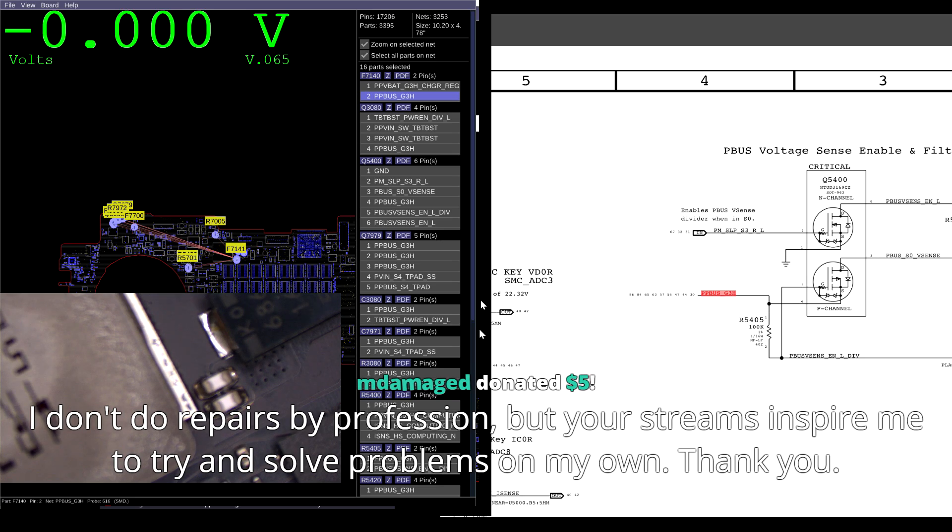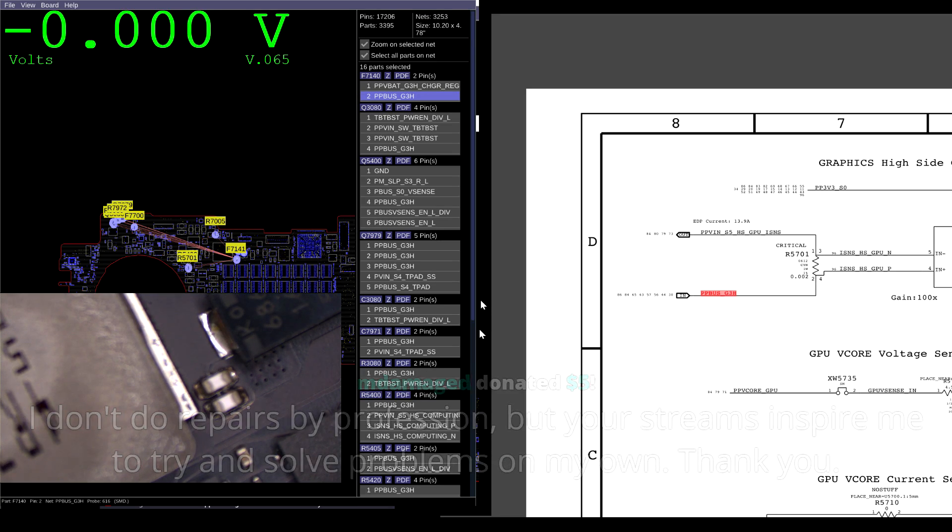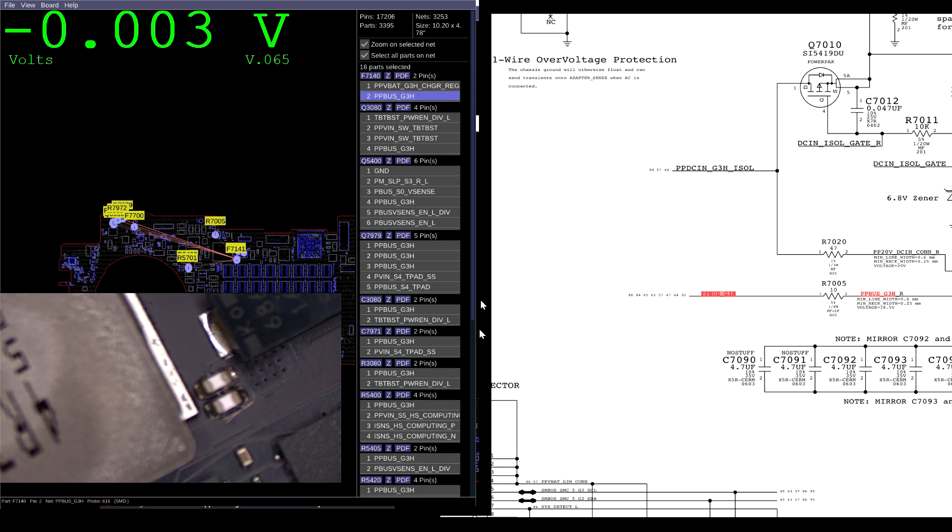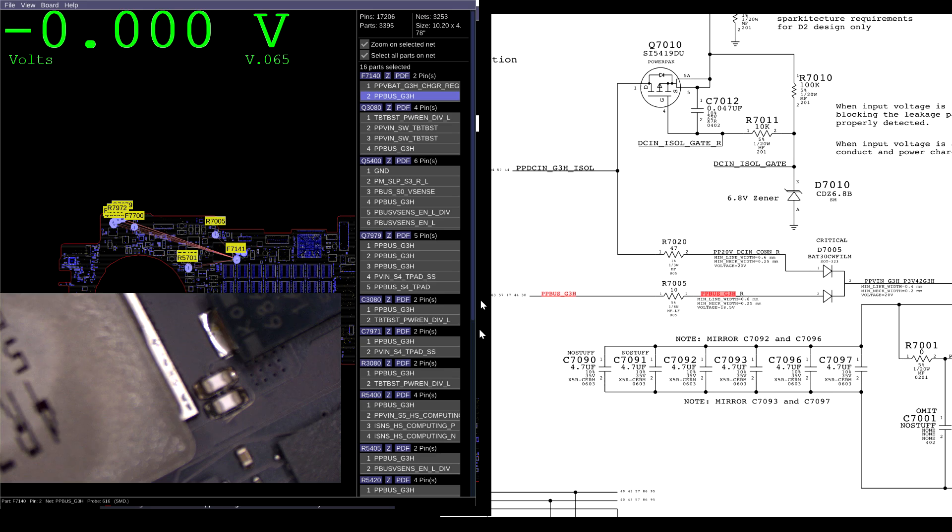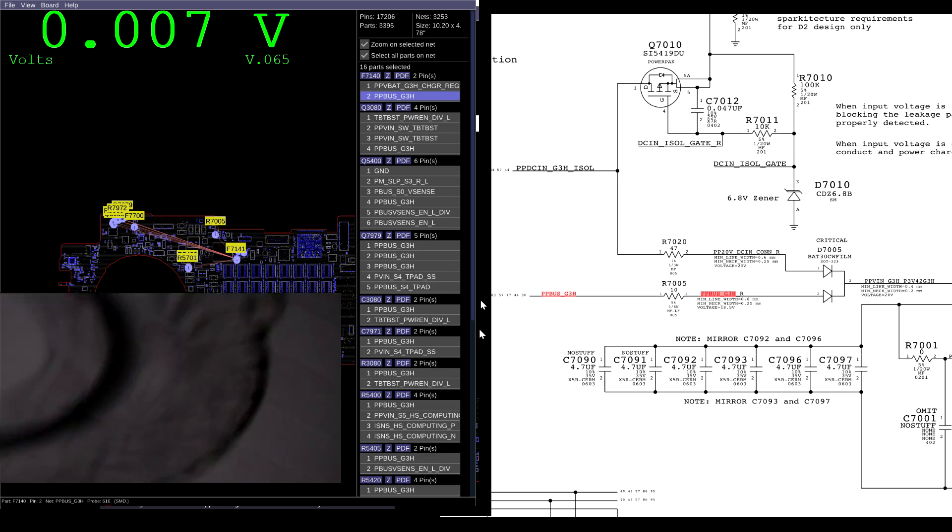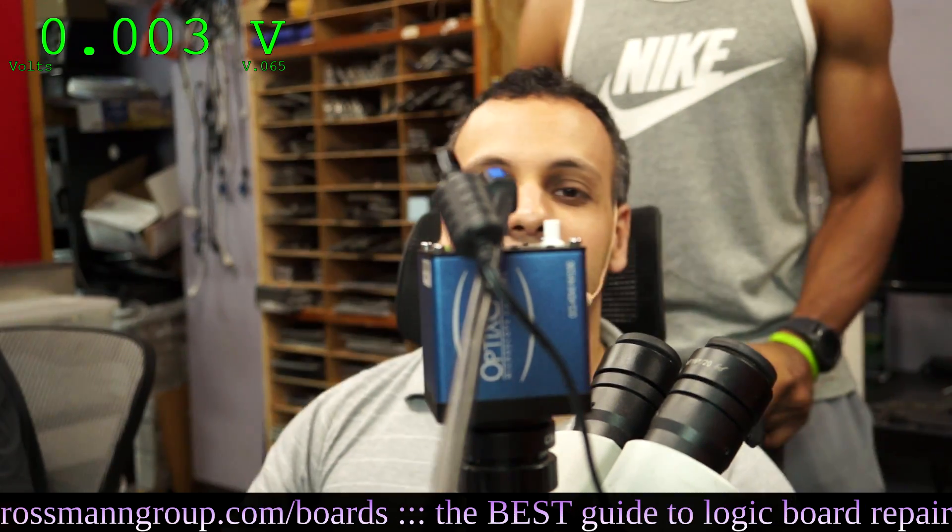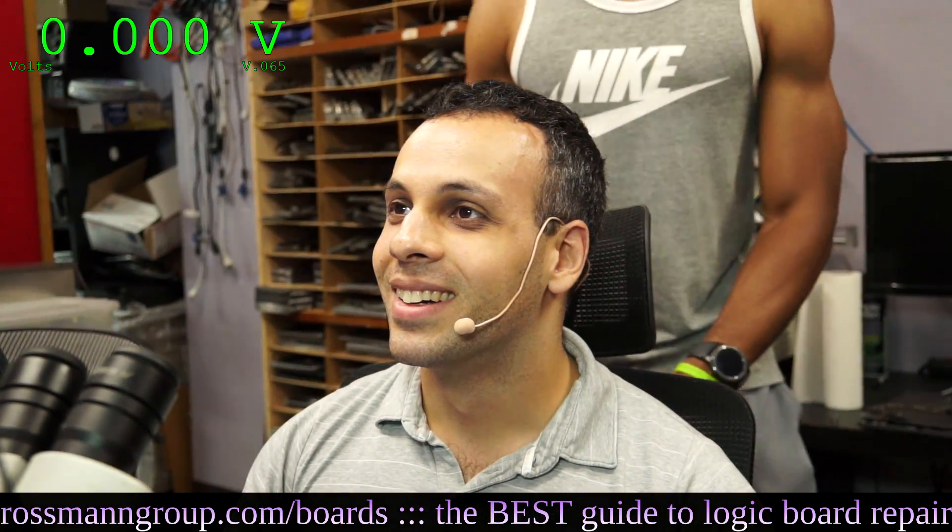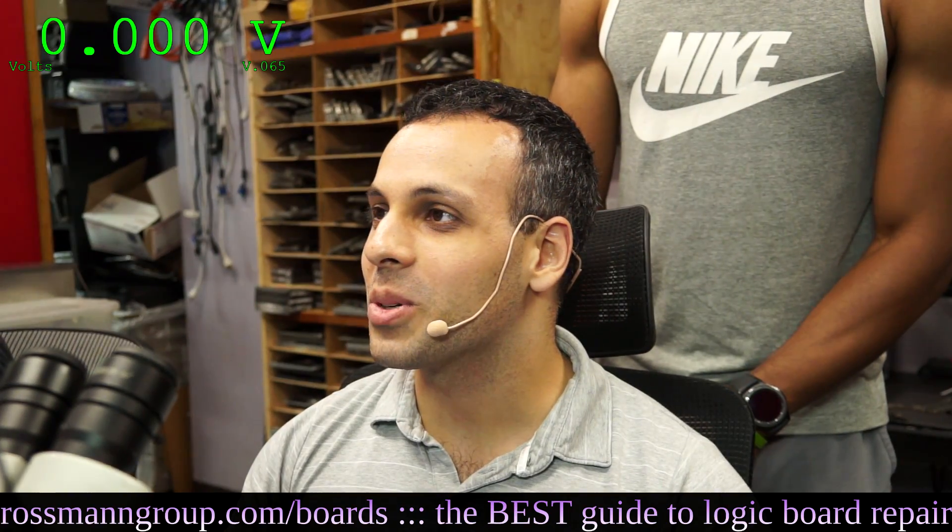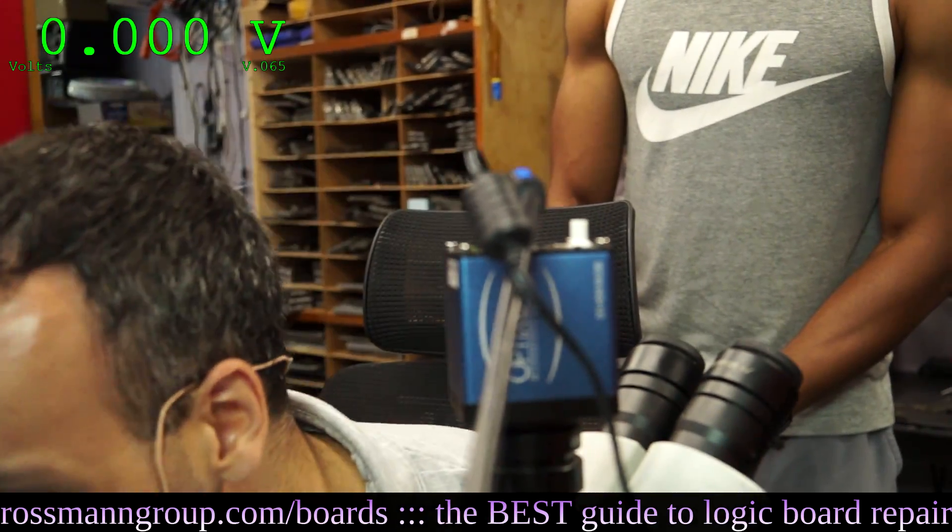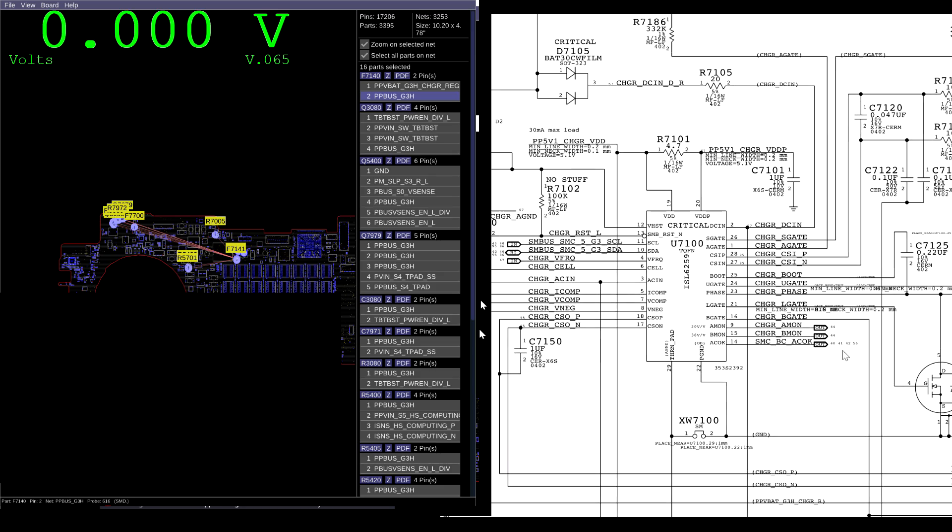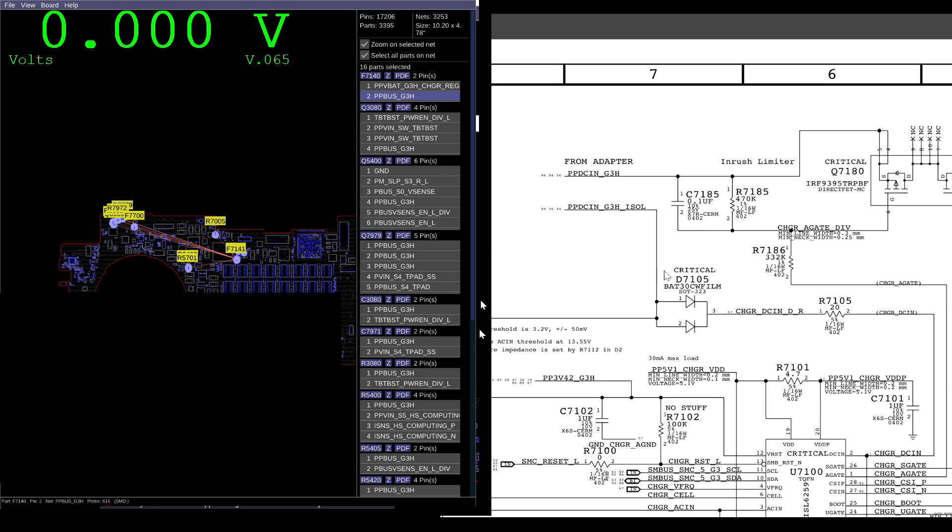Is there seriously not a single person in this chat that knows what creates that power rail? Really? Four years? The intern knows what creates this. So PP bus G3 hot is created by a buck converter controlled by U7100, which allows the charger to go through and then sends 12.6 volts to the system. So let's check out where that is.